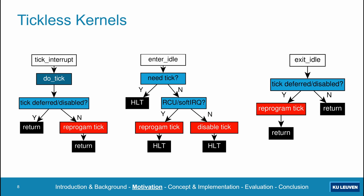Tickless kernels perform a lot better in such overcommitted virtualized scenarios, because they do not require scheduler ticks to be injected into idle vCPUs. However, these tickless kernels have another big problem: the tick has to be reprogrammed upon almost every transition between active and idle vCPU states. Some workloads by design cause many of these transitions, for example multi-threaded applications relying on blocking synchronization, and IO-intensive applications. For such workloads, tickless kernels may in fact induce more tick-related virtualization overhead than classic periodic ticks.